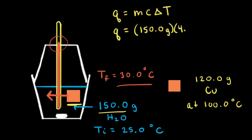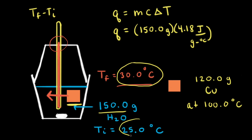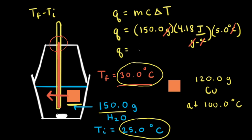C is the specific heat of water, which is 4.18 joules per gram degree Celsius. Delta T is the change in temperature — the final temperature Tf minus the initial temperature Ti. The final temperature is 30.0 degrees Celsius and the initial was 25.0 degrees Celsius, so 30.0 minus 25.0 equals 5.0 degrees Celsius. The grams and degrees Celsius cancel, leaving joules. Q equals positive 3.1 times 10 to the third joules, meaning this is the energy gained by the water.